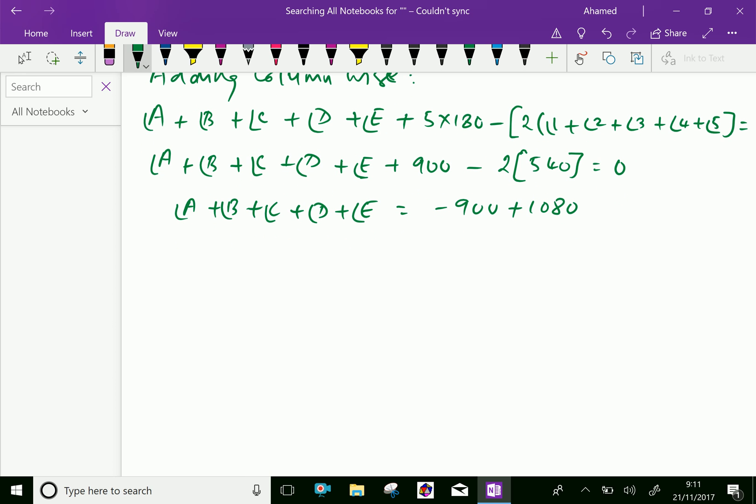Now, therefore we can write angle A plus angle B plus angle C plus angle D plus angle E is 1080 minus 900, is 180. So we found in the figure of the star, all corner angle sum is 180 degrees.